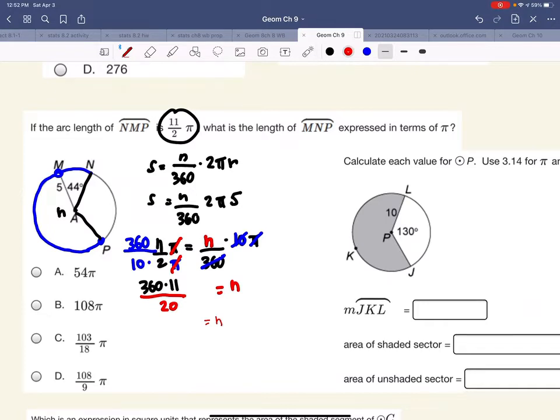Let's see what that is in our calculator. 360 times 11 divided by 20. So we get 198 degrees.